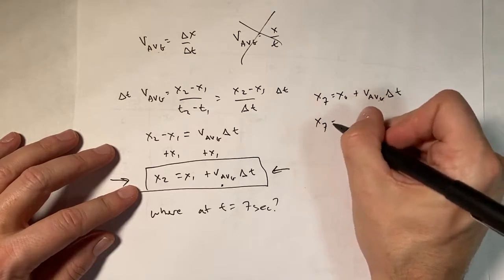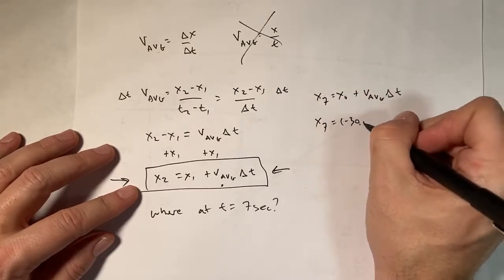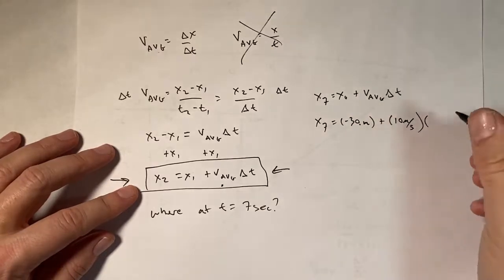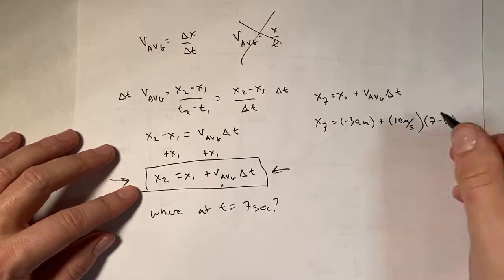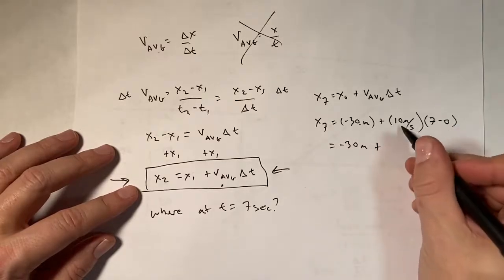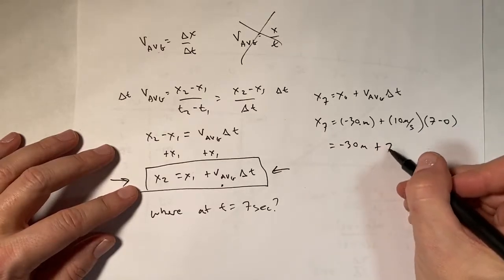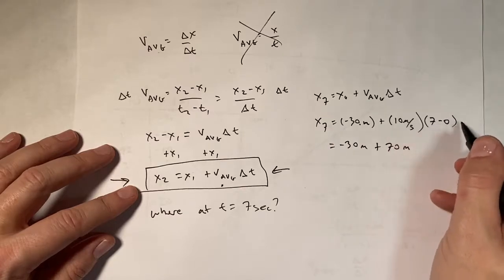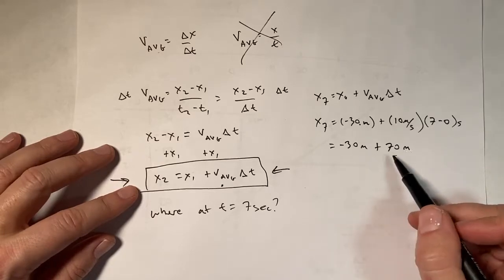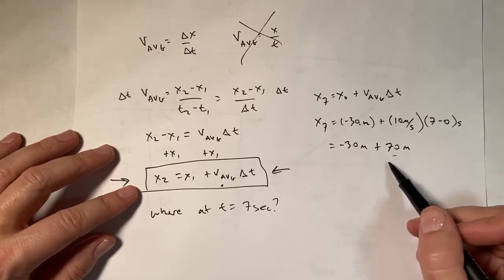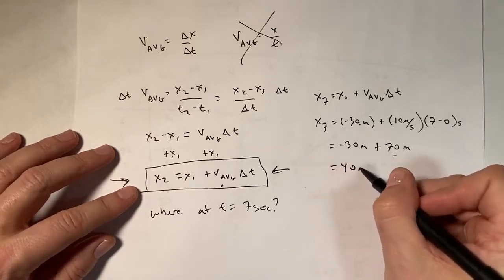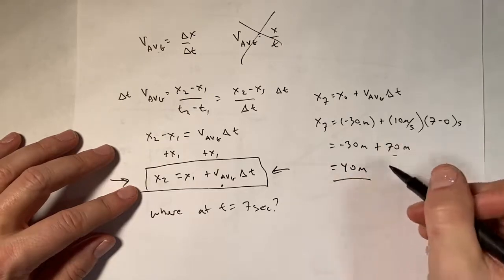Okay, so I'm going to say x7 equals x0 plus v average delta t. So x7 is x0, which is negative 30 meters, plus v average, which is 10 meters per second, times the change in time, which is going to be 7 seconds minus 0 seconds. So I get negative 30 meters plus 7 times 10 is 70 meters. So I get meters. When you add two quantities, it's important to realize that they have to have the same units or you can't add them. But now I have negative 30 plus 70, and I get equals 40 meters.